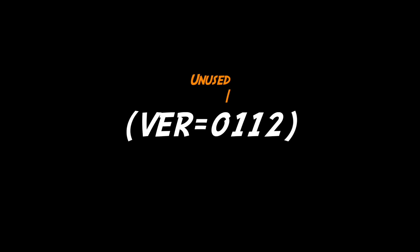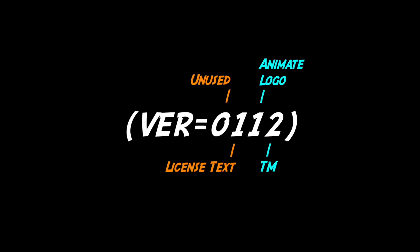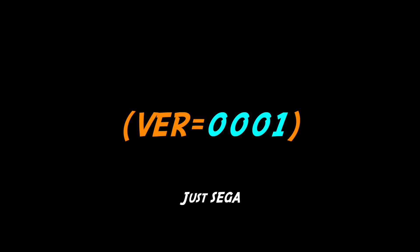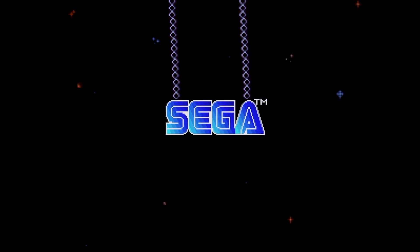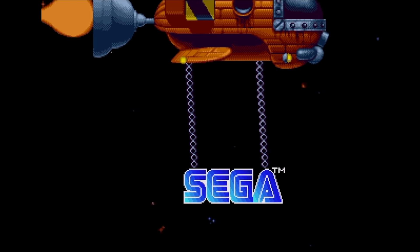The first digit isn't actually used, so on to the second one. If that is a one then the 'licensed by Sega' text is displayed; if it's a zero then that text is removed. If the third digit is a one then the Sega logo hangs off of Pugsy's spaceship and swings around below it; if it's a zero the Sega logo is displayed statically in the center of the screen instead. And if the fourth digit is a two, the TM or trademark symbol is displayed next to the Sega logo; if it's a one then the TM is removed; and if it's a zero the Sega logo screen is skipped entirely. Here are the different combinations and how each screen looks.